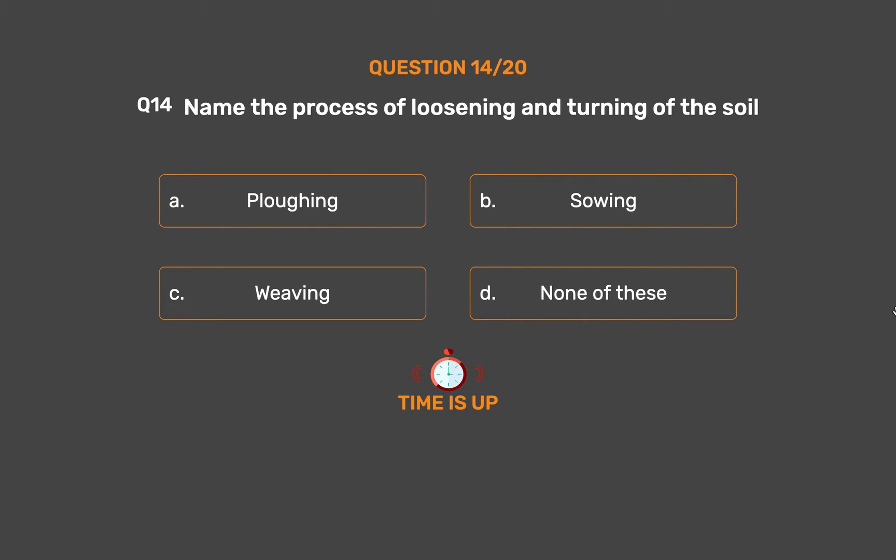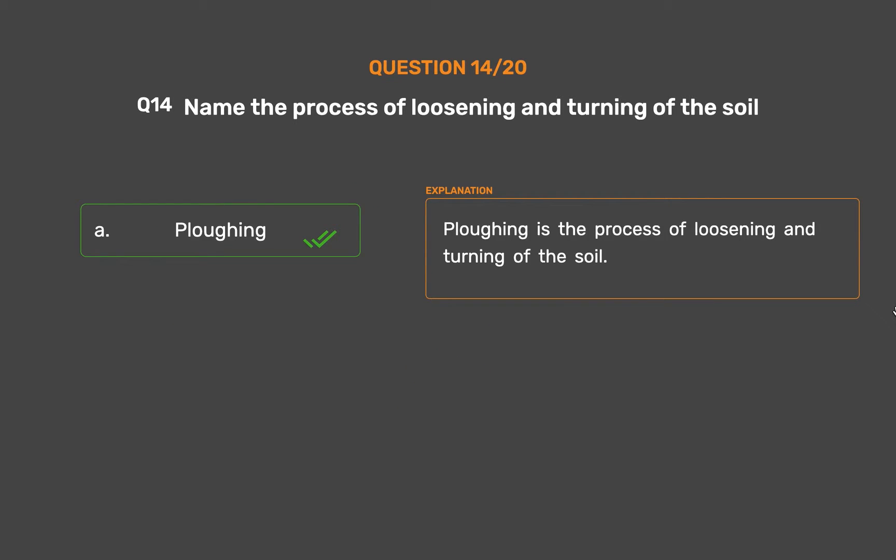The correct answer is Option A: Plowing. Plowing is the process of loosening and turning of the soil.